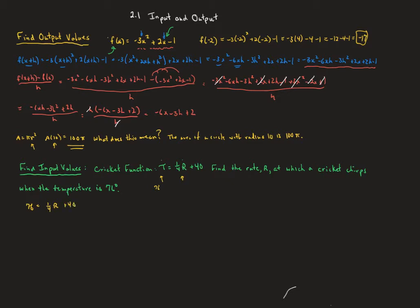Subtracting 40 from both sides gives us 36 is equal to one fourth r. Then multiplying by 4: 4 times 30 is 120, 4 times 6 is 24, so 120 plus 24 is 144. So that would be 144 chirps per minute in the context of this problem.